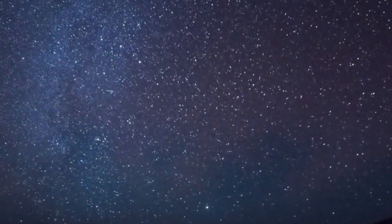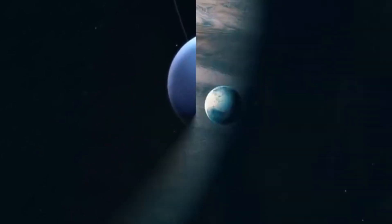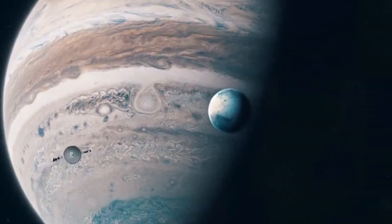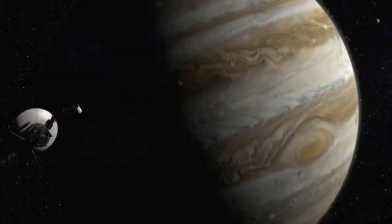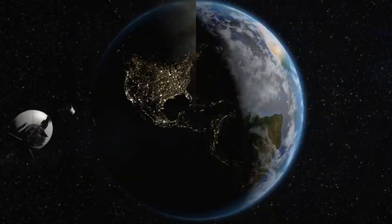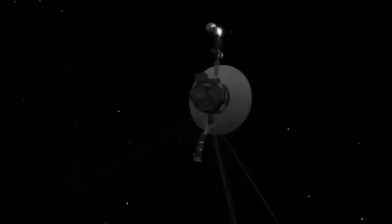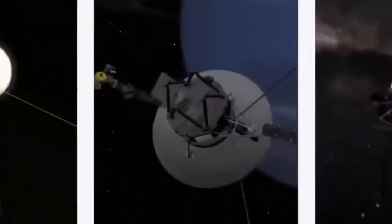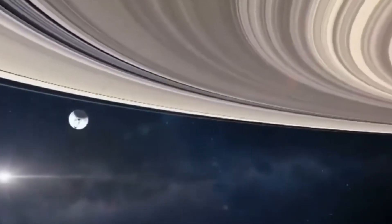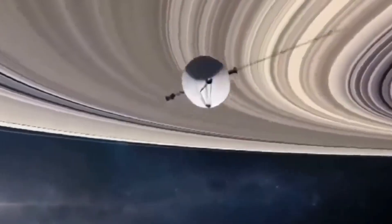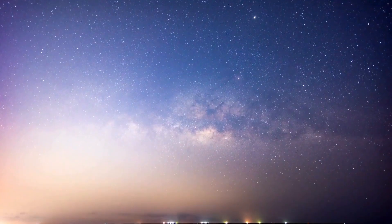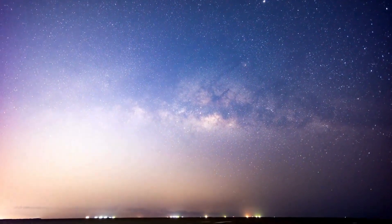Three years later, Voyager 2 reached Neptune, revealing the remarkable features of this distant ice giant. During its encounter with Neptune, Voyager 2 recorded wind speeds of up to 1,000 mph, making it the fastest wind ever recorded on a planet in our solar system. As the spacecraft passed within 2,980 miles of Neptune's azure methane-rich atmosphere, it provided unprecedented insights into this distant world.